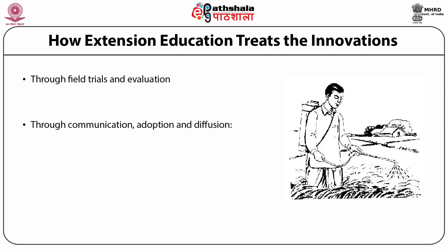The element of diffusion deals with the time innovations are taken to end-users in a specified period of time — that is recognized as diffusion; otherwise it becomes part of communication. The third way treatments are given to innovations is through strategic combination of workable strategies. Evaluating the innovation at the field level is one aspect; the other includes deciding about the need of the innovation in a particular locality for a particular community, considering alternatives available, combining them with existing indigenous processes or methods. This can only be achieved through strategic combination of workable strategies.